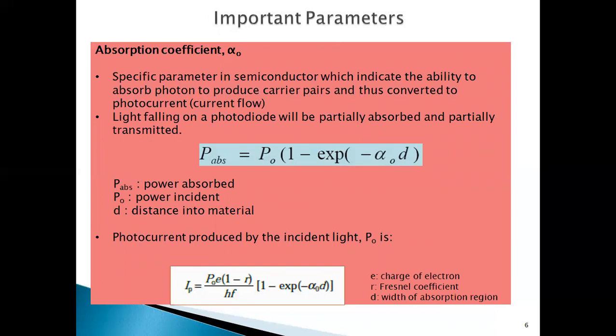The first important parameter of the photodiode is the absorption coefficient, symbolized as alpha (α). This coefficient is a specific parameter of the semiconductor material — it represents the material's ability to absorb photons and produce carrier pairs. The absorbed power can be written as: P_absorbed = P₀(1 − e^(−α·d)), where P₀ is the incident power, α is the absorption coefficient, and d is the distance into the material.